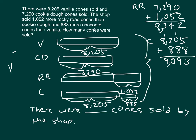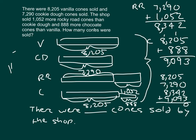Finally, we take all four numbers and add them together: 8,205 vanilla cones, 7,290 cookie dough cones, 8,342 Rocky Road, and 9,093 chocolate. In the ones place: 5 plus 0 plus 2 plus 3 gives 10 — write 0, regroup 1. Then 1 plus 9 plus 9 plus 4 plus 9 is 23 — write 3, regroup 2. Continuing through the columns gives a total of 32,930 cones sold by the shop.